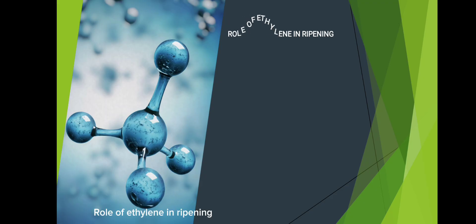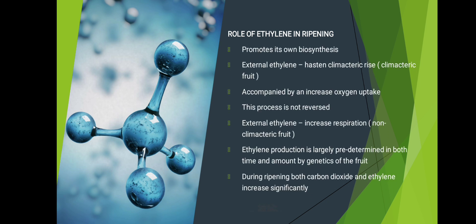Role of ethylene in ripening. Ethylene promotes its own biosynthesis. External ethylene hastens the climacteric, accompanied by increased oxygen uptake, and this process is not reversed. External ethylene increases respiration. Ethylene production is largely predetermined in both time and amount by the genetics of the fruit.